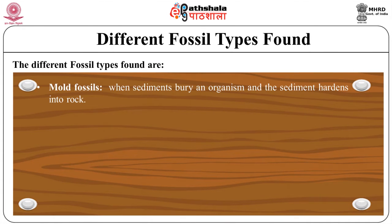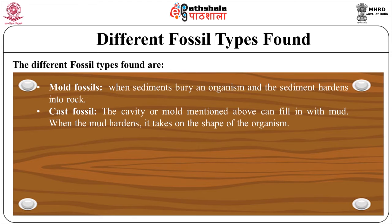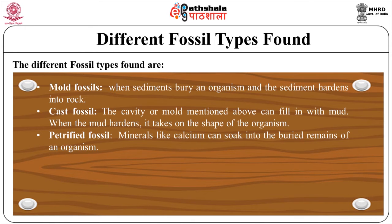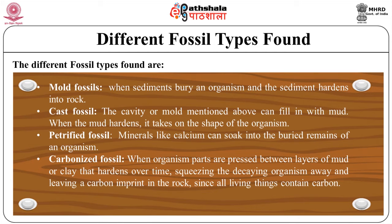The different fossil types found are: mold fossils — when sediments bury an organism and the sediment hardens into rock, the organism decays slowly inside the rock, leaving a cavity in the shape of the organism; cast fossils — the cavity or mold can fill in with mud, and when the mud hardens, it takes on the shape of the organism; petrified fossils — minerals like calcium can soak into the buried remains of an organism, replacing the remaining bone and changing it into rock; and carbonized fossils — when organism parts are placed between layers of mud or clay that harden over time, squeezing the decaying organism away and leaving a carbon imprint in the rock, since all living things contain carbon.